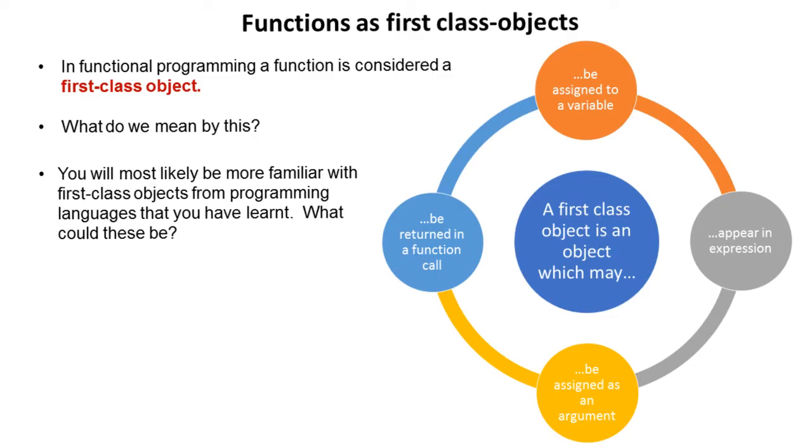A first-class object is any object which may be assigned to a variable. It can appear in expressions, be assigned as an argument, and be returned in a function call.